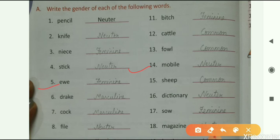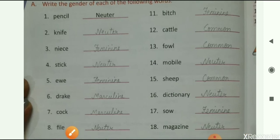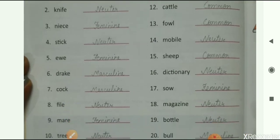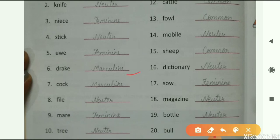Then fifth one is ewe. Ewe is feminine. So write here, F-E-M-I-N-I-N-E, feminine gender. Then drake. Drake is masculine gender. Write here, masculine M-A-S-C-U-L-I-N-E. Then seventh one is cock. Cock is again masculine gender. So write here, masculine M-A-S-C-U-L-I-N-E.